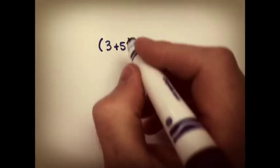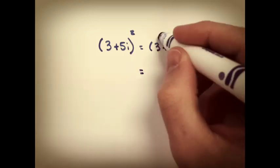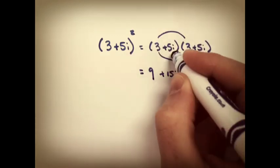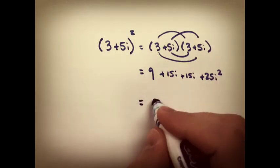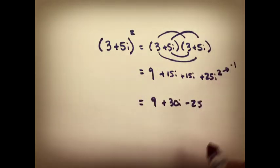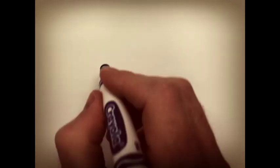If we took a complex number, say 3 plus 5i, and I asked you to square it, one way you could do it would be to foil it out, just keeping it in rectangular form. A little bit of work, and you end up with the complex number negative 16 plus 30i. Piece of cake, no problem.